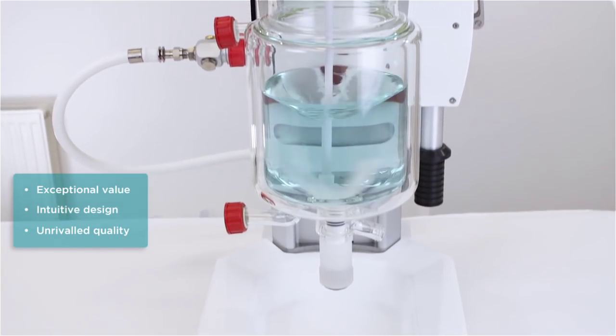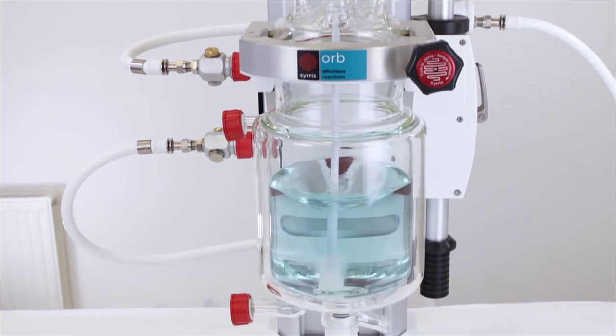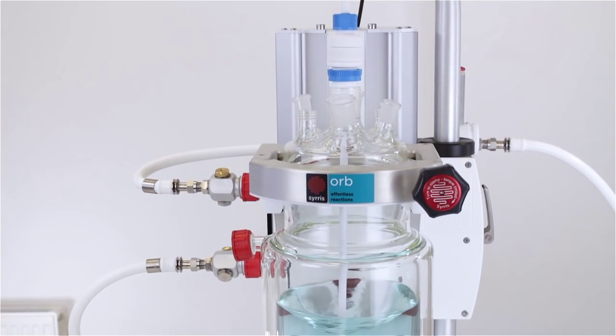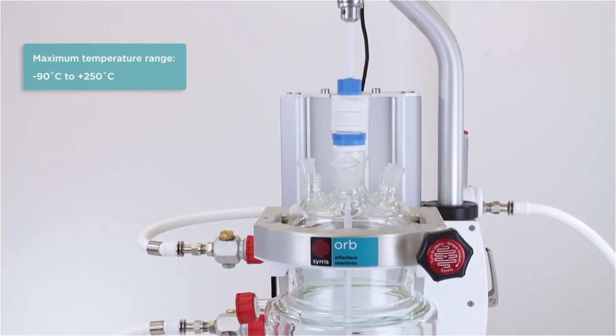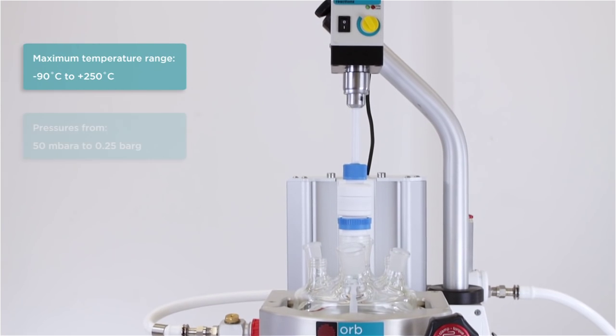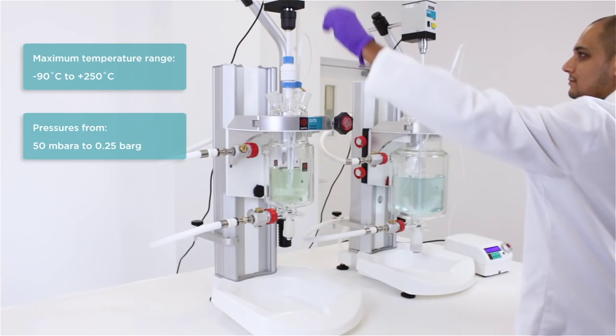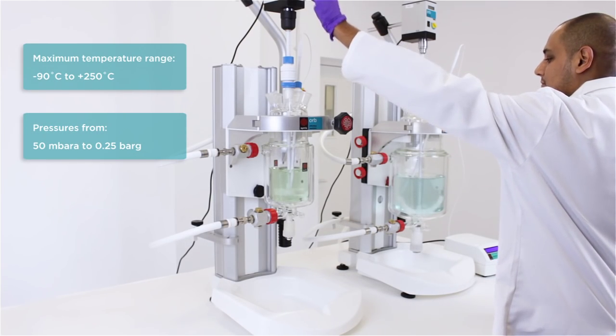Designed by chemists, Orb is a high-quality, user-friendly and reliable solution for batch reactions, with a maximum temperature range of minus 90 degrees C to plus 250 degrees C and pressures from 50 millibar to 0.25 bar.